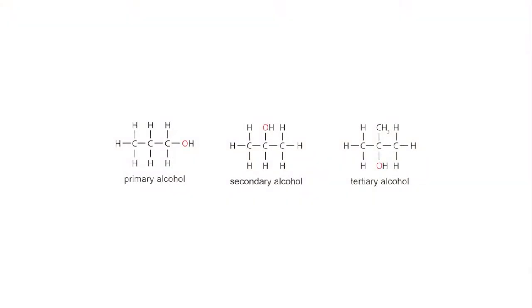To test for different alcohols, acidified potassium dichromate is used. The alcohols react differently, depending on whether they are primary, secondary or tertiary alcohols.